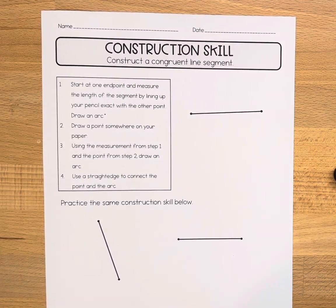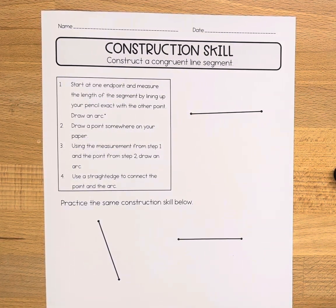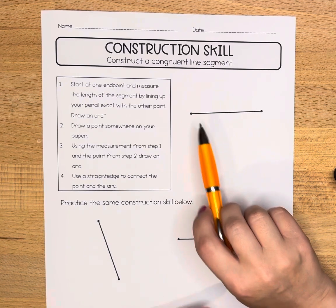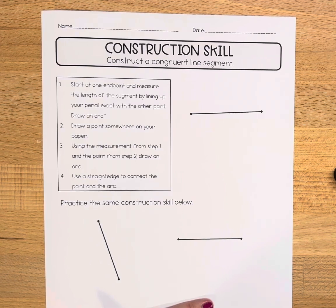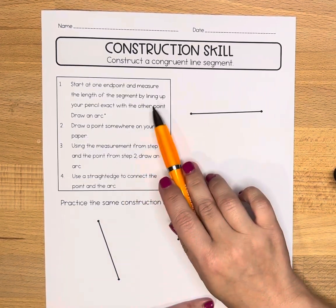In this video, we'll be constructing a line segment that is congruent to a given line segment. In our sample here, we are given this line segment. We need to create one that is congruent to it. Here are our steps.